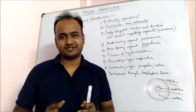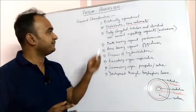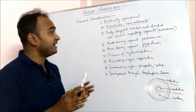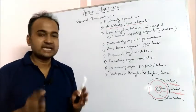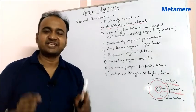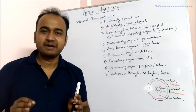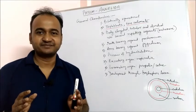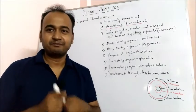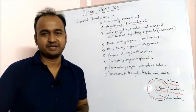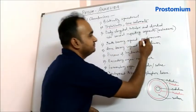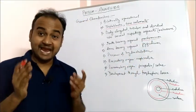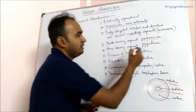The body is elongated, tubular, and divided into several repeating segments called metameres, and this phenomenon is called metamerism, which is only found in annelids. The first mouth-bearing segment is called the prostomium, and the last anus-bearing segment is called the pygidium.